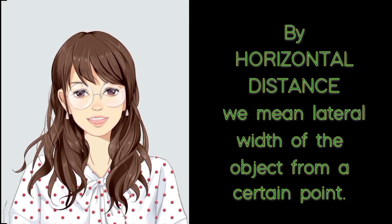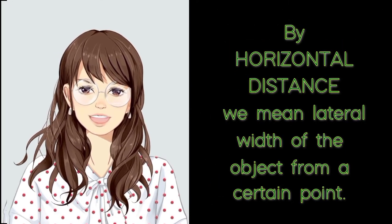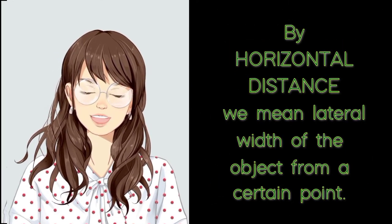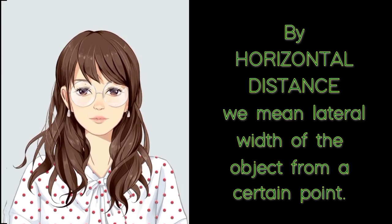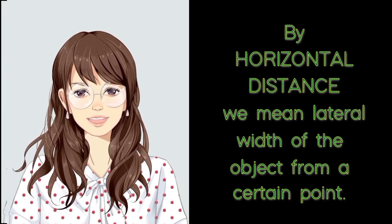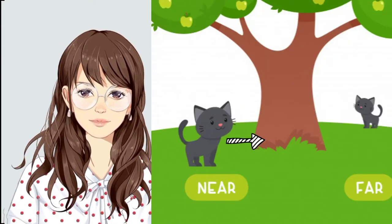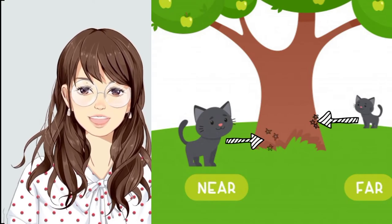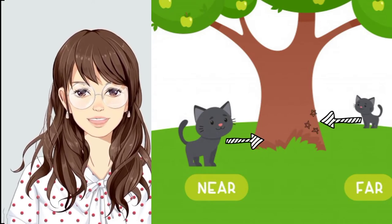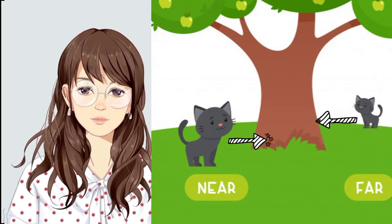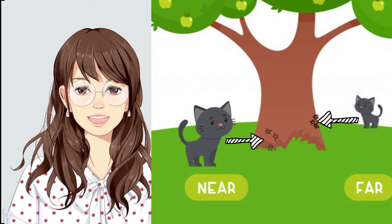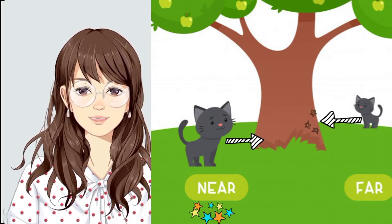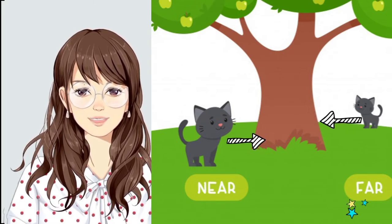By horizontal distance, we mean the lateral width of the object from a certain point. And to tell the horizontal distance of an object from a certain point, we can use the words near or far.